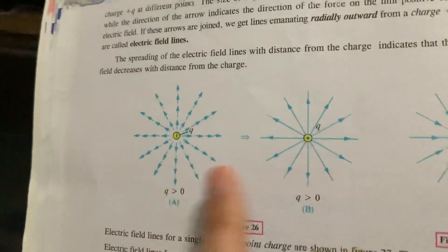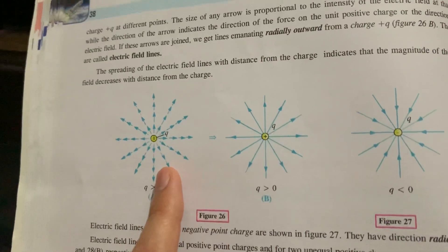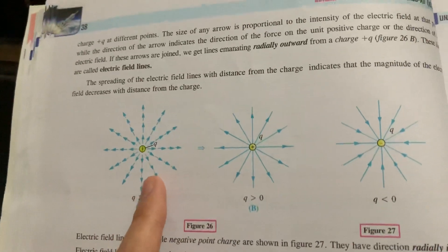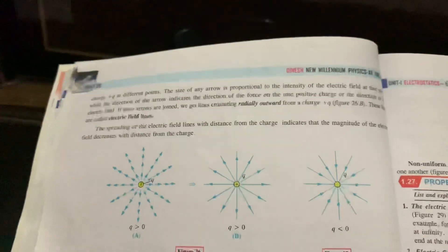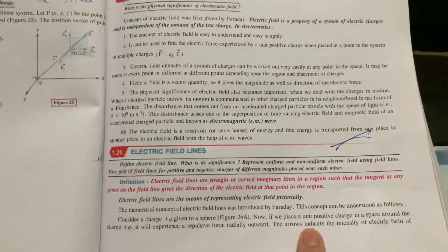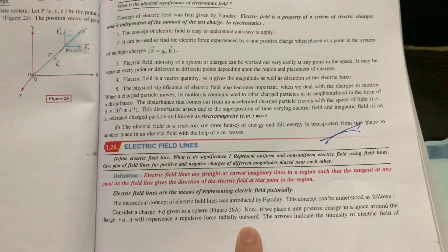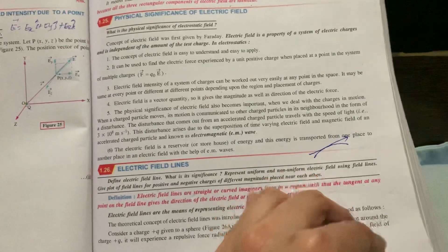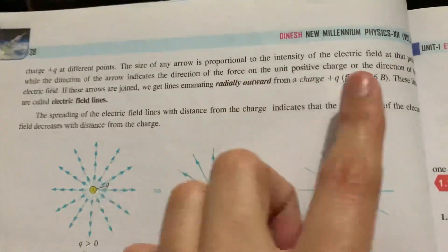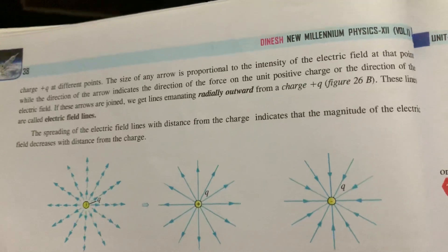If I want to compare these two diagrams, the basic difference is that here the number of arrows is more, which indicates that the density of your electric field is more, or you can say the magnitude of the electric field is more as compared to the other case. We have considered a charge plus Q given in a sphere as in diagram 26A. If we place a unit positive charge in the space around charge Q, it will experience a repulsive force radially outward. The arrows indicate the intensity of charge Q at different points, and the size of the arrow is proportional to the intensity of the field at that point, while the direction of the arrow indicates the direction of force on the unit positive charge, or the direction of the electric field.